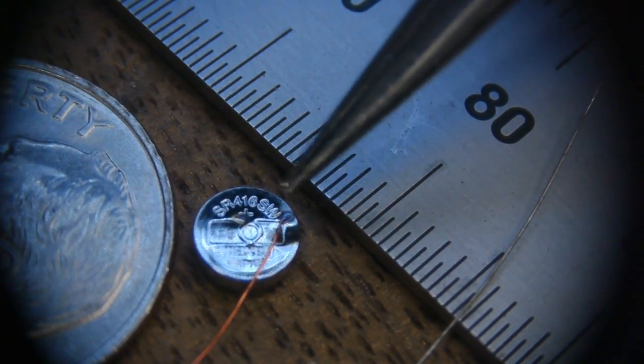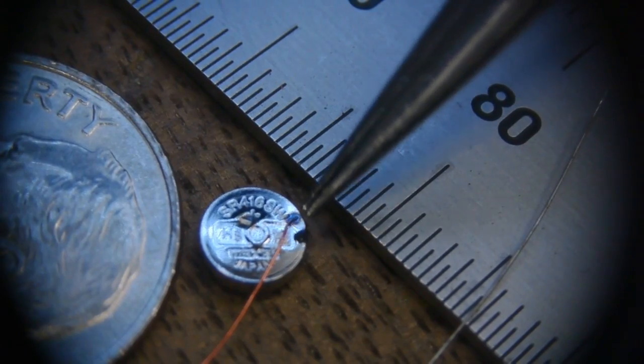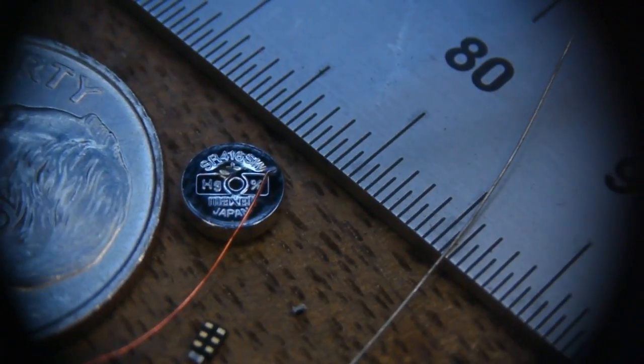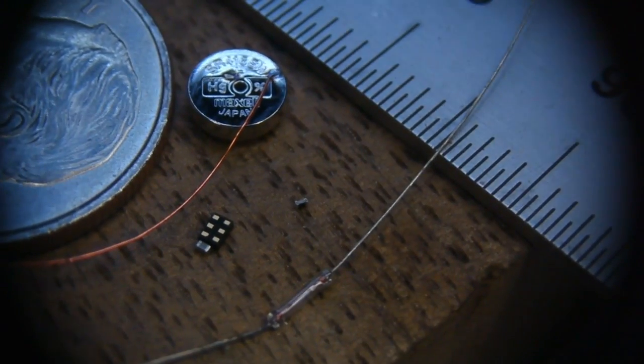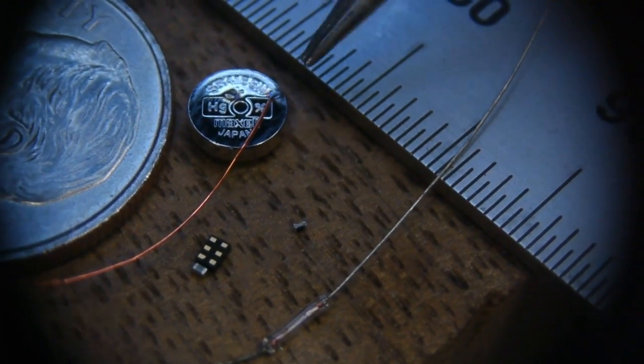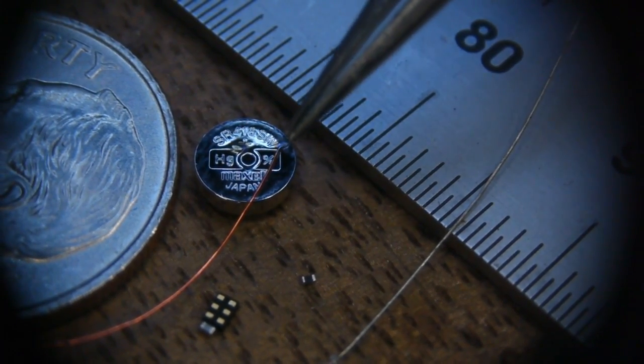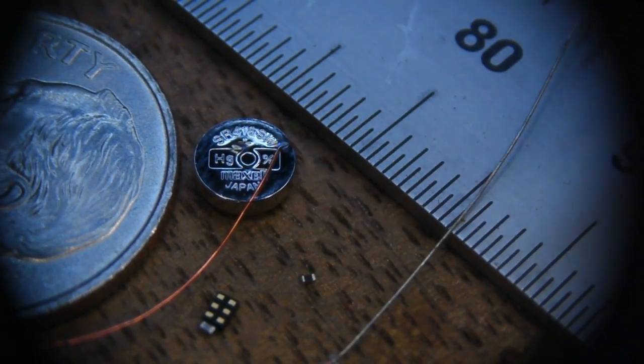It welds the copper wire to the steel case of the battery. The fact that it's capacitive discharge is good because the current happens, or the flow of current is so quick, that it doesn't have time to cook the whole battery before it welds the thing in place.